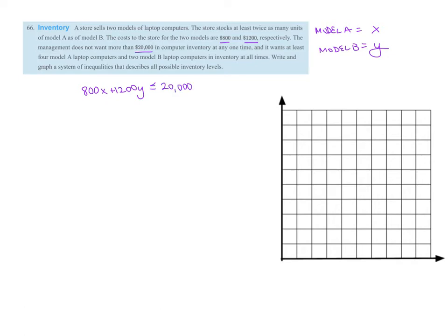And the store stocks at least twice as many units of Model A as Model B. So A, which is our X, and then Model B is our Y. We want twice as many, at least twice as many. So what we're going to have to do is multiply two to the Model B's or our Y values in order for that to work. So X is greater than or equal to 2Y. At least twice as many.